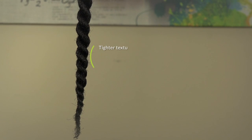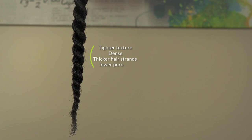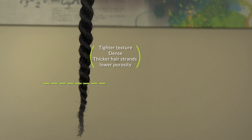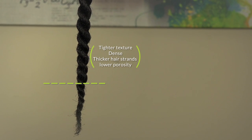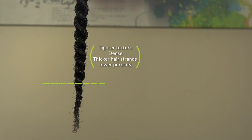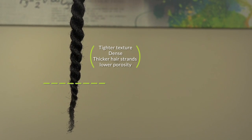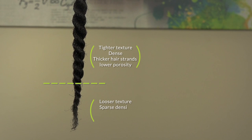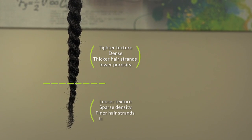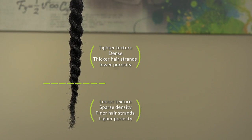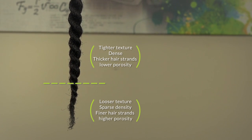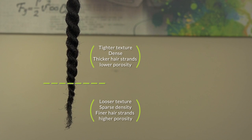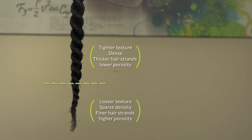Have you ever noticed that no matter what you do, your ends always seem to have a higher porosity and a rougher texture than the rest of your hair? Even if you just got a fresh trim, the ends of your hair will always have a higher porosity and rougher texture. Here's why.